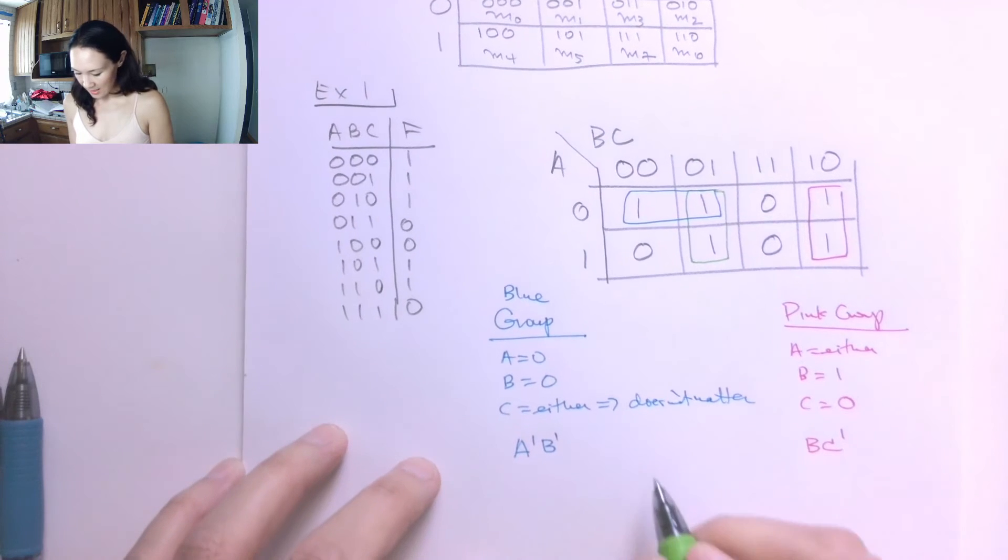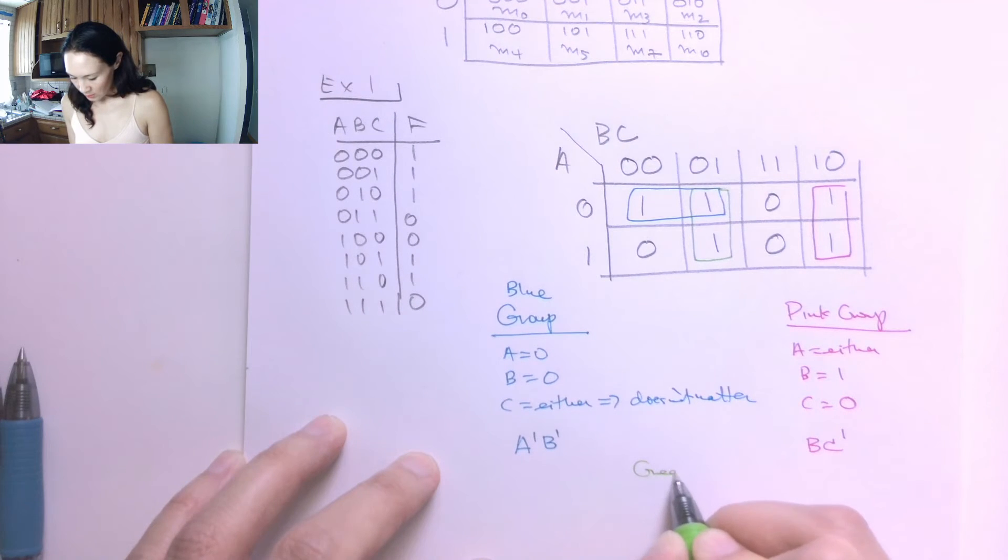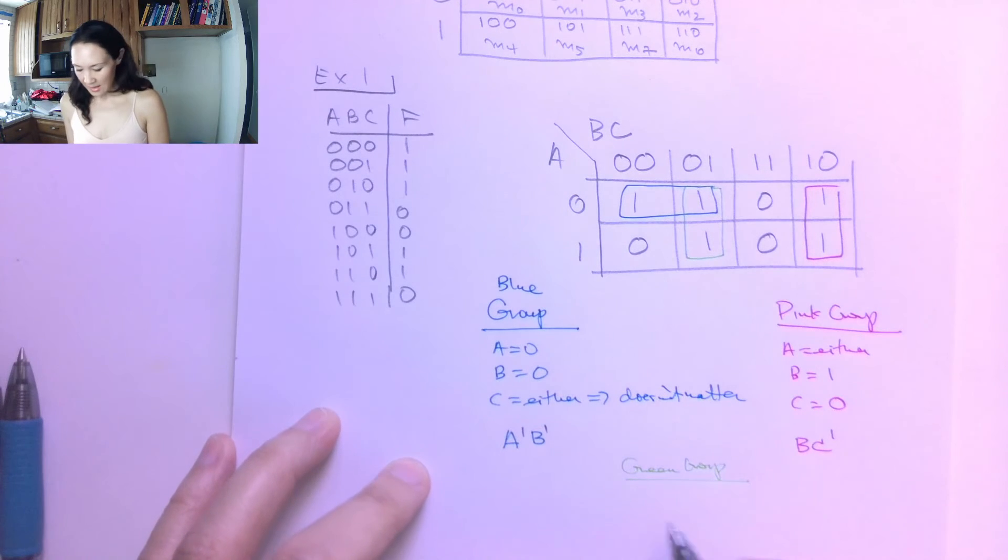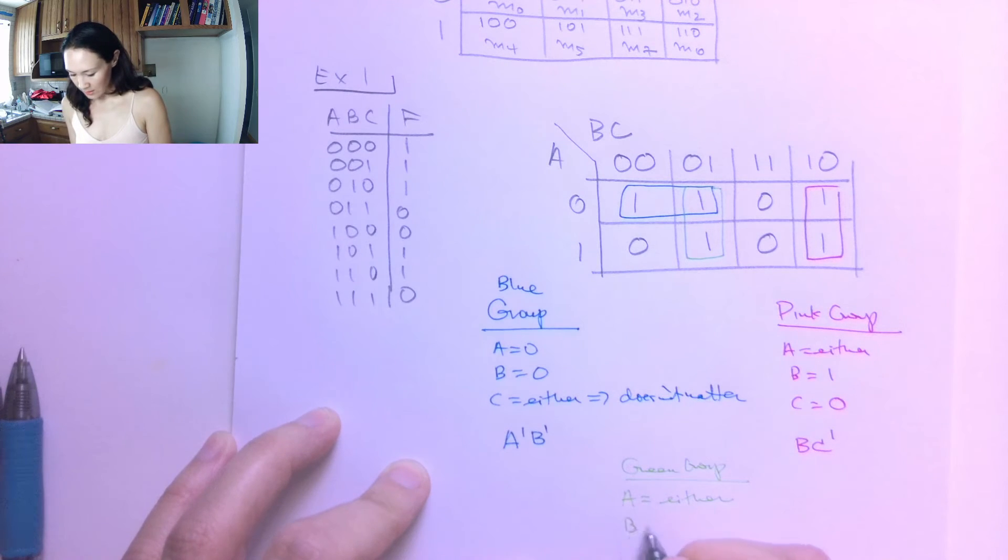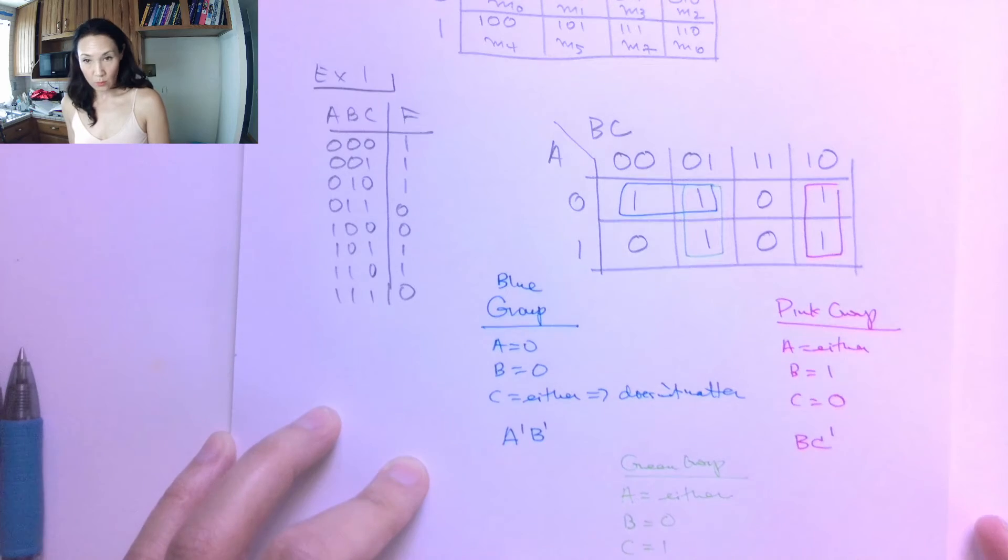Now the last grouping we have is the green group. And here, what do we have? We have that a can be either 0 or 1. But we have that b is equal to 0. And we have that c is equal to 1.